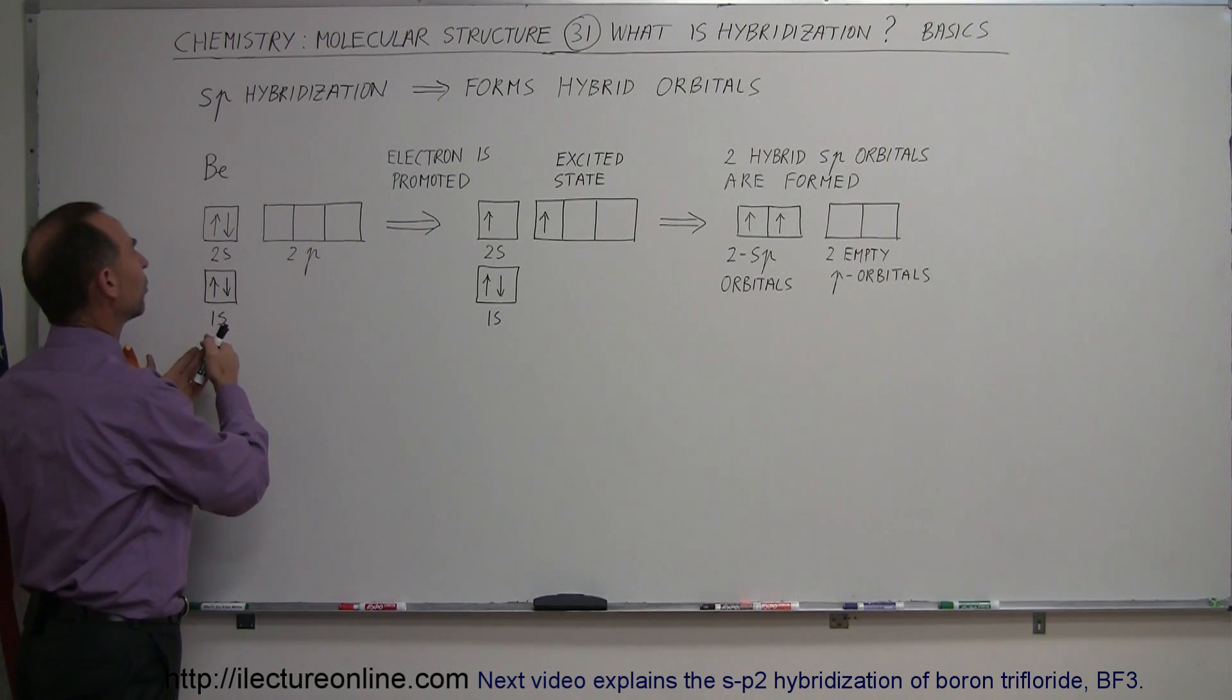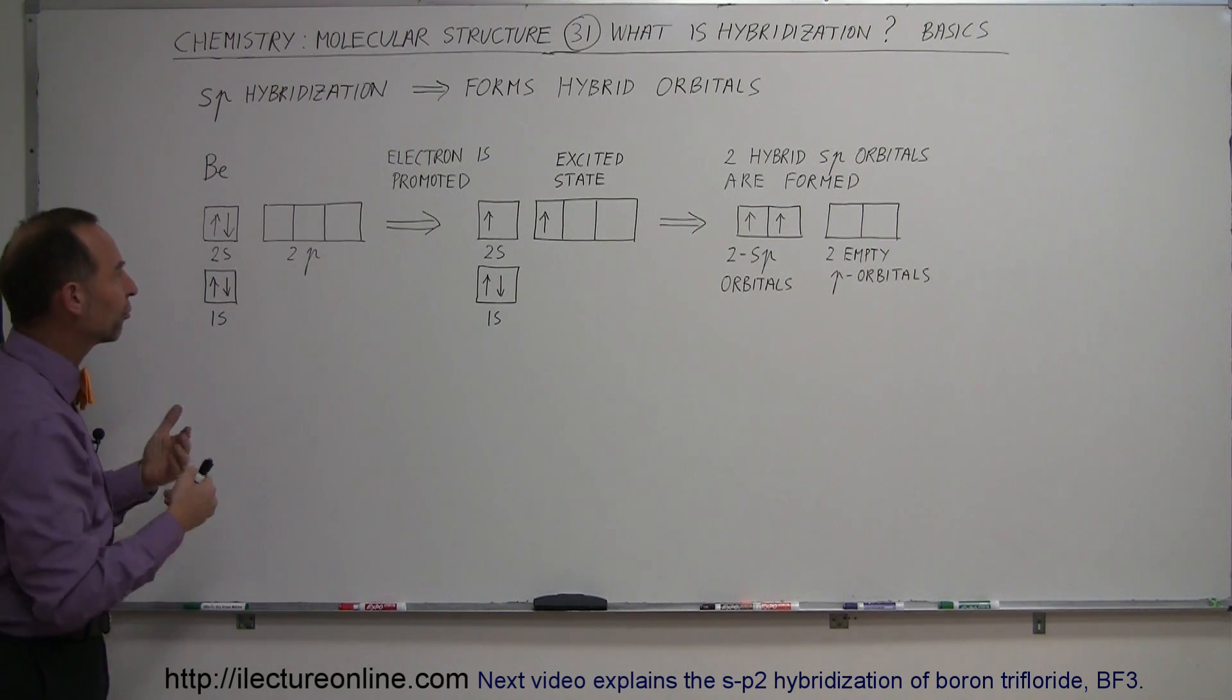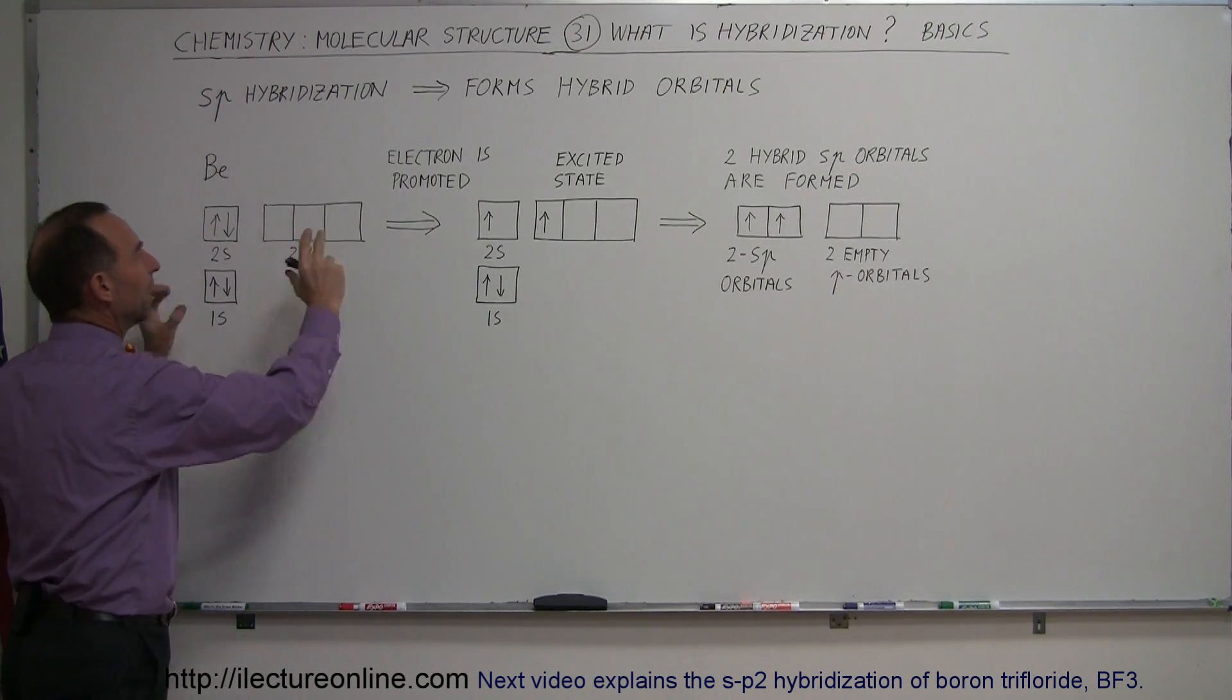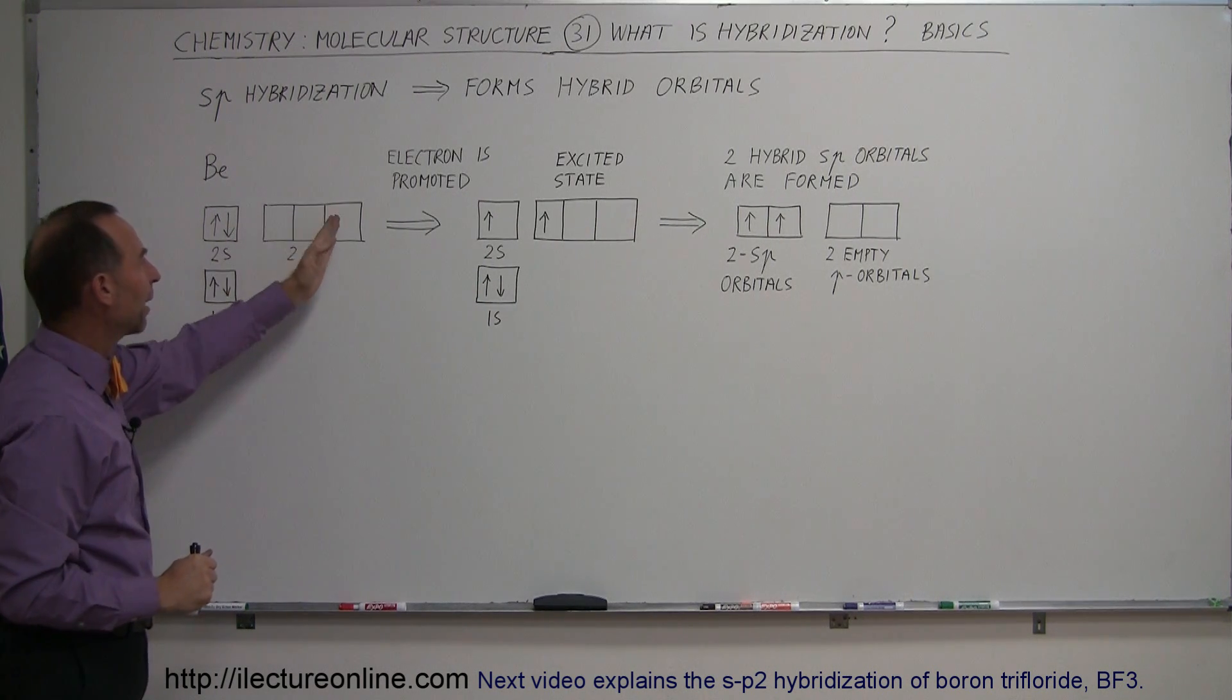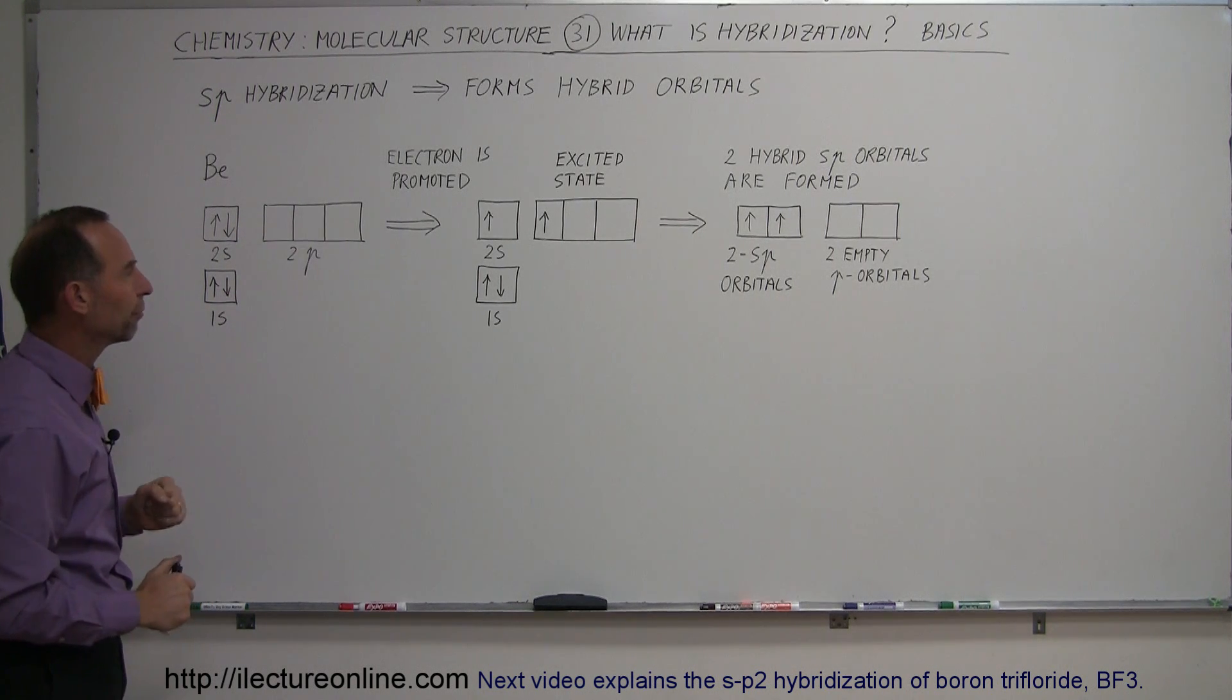In the case where we have some of the p orbitals or s orbitals not completely filled it now allows us for a process where we can reshape the orbitals by moving electrons around and reshaping them. So usually that hybridization process happens when there's some empty p orbitals available for the process.